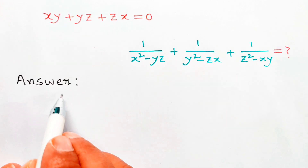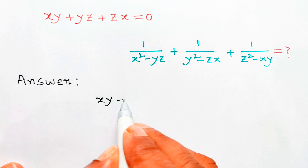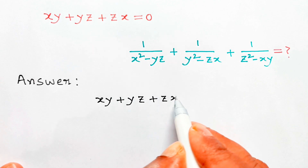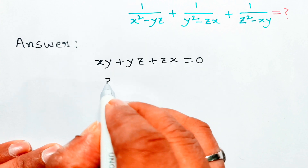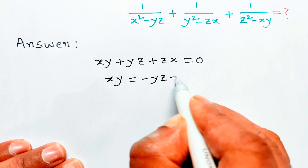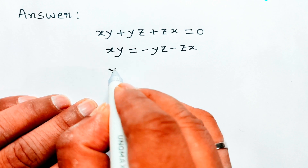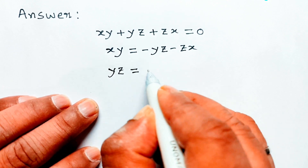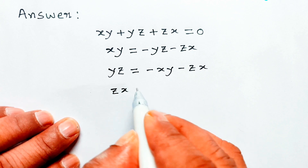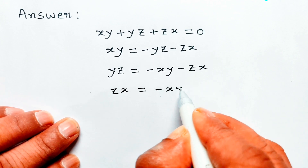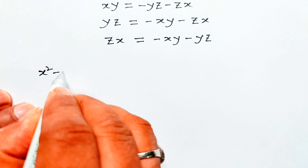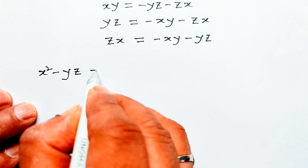Given xy plus yz plus zx equal 0. Then xy equals minus yz minus zx. yz equals minus xy minus zx. zx equals minus xy minus yz.